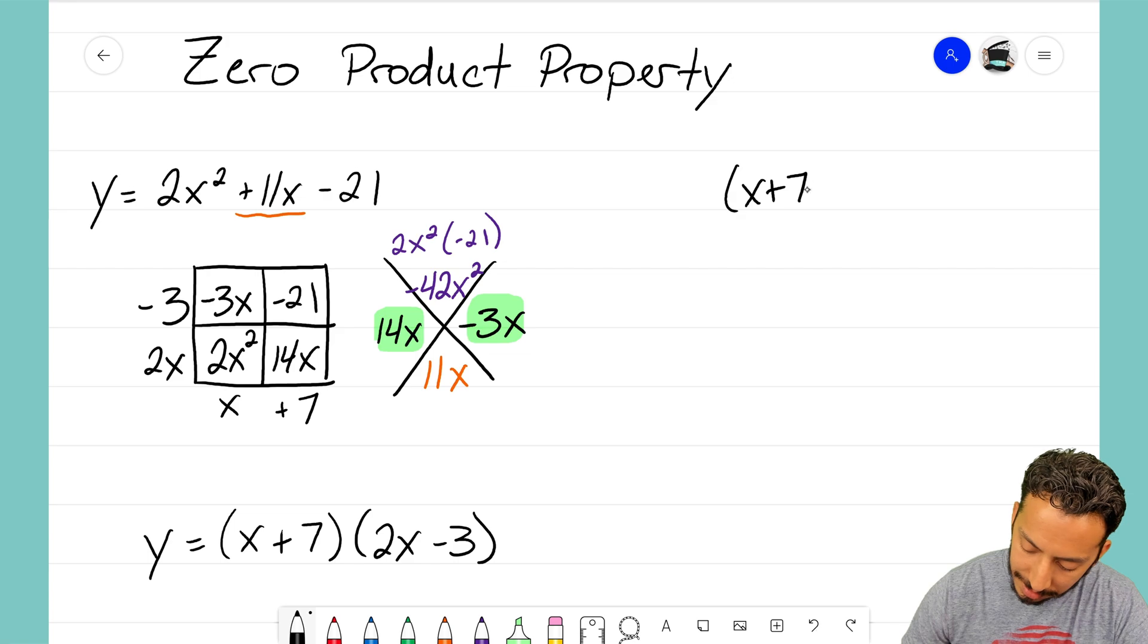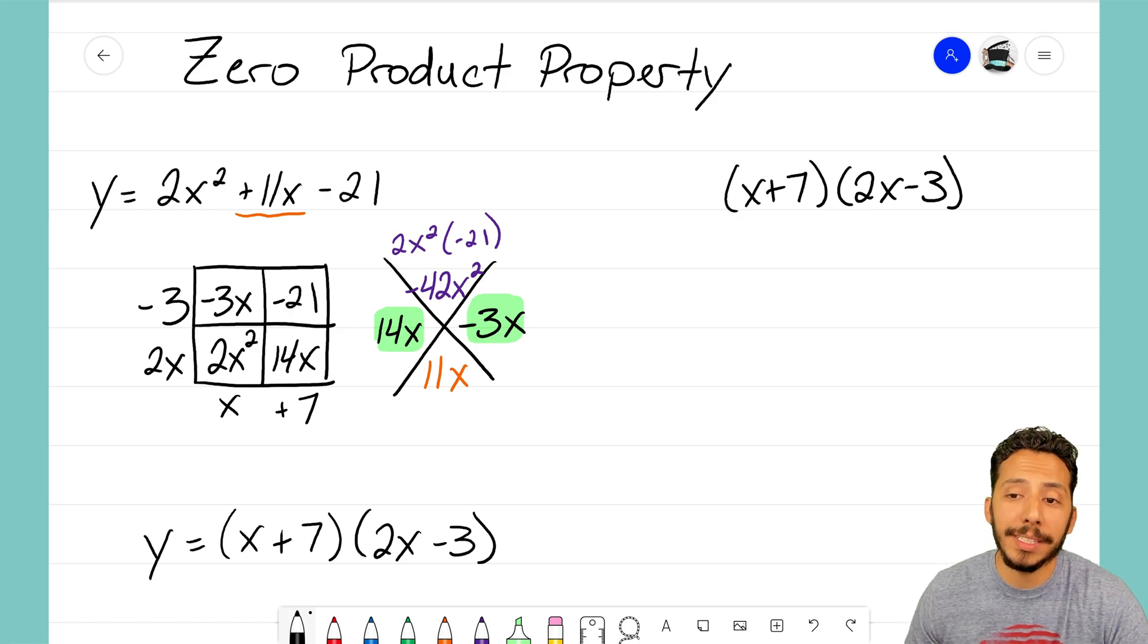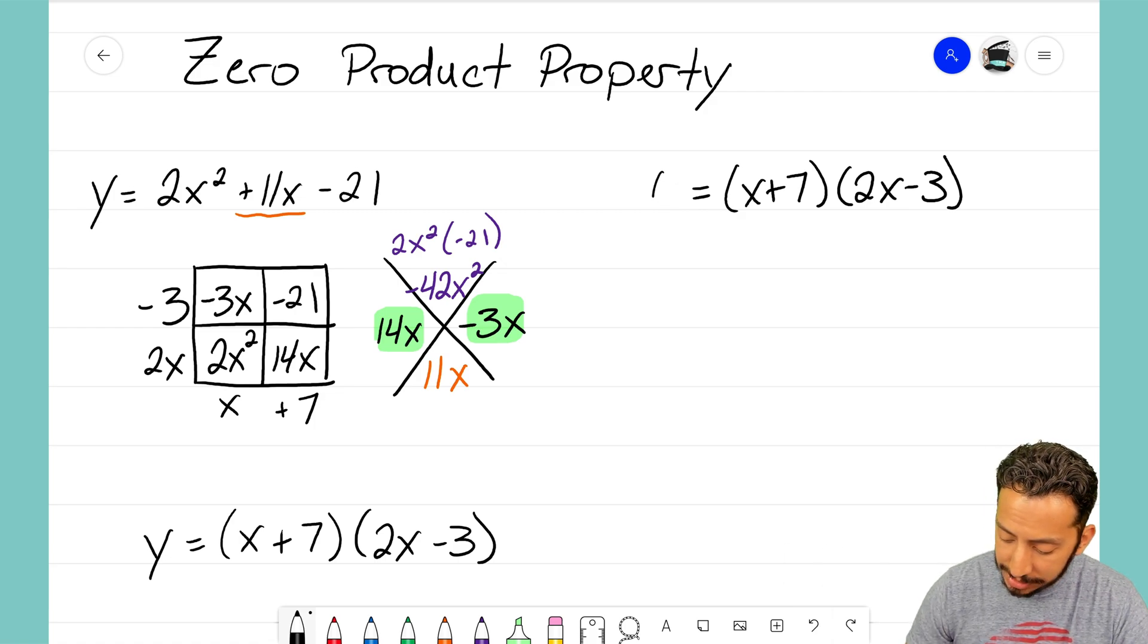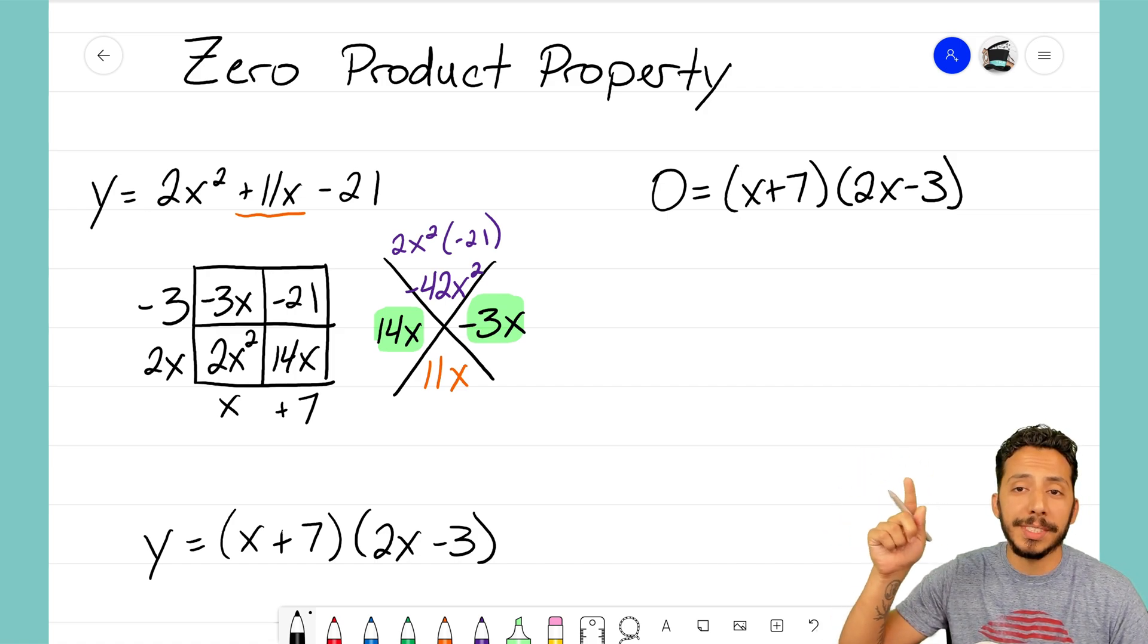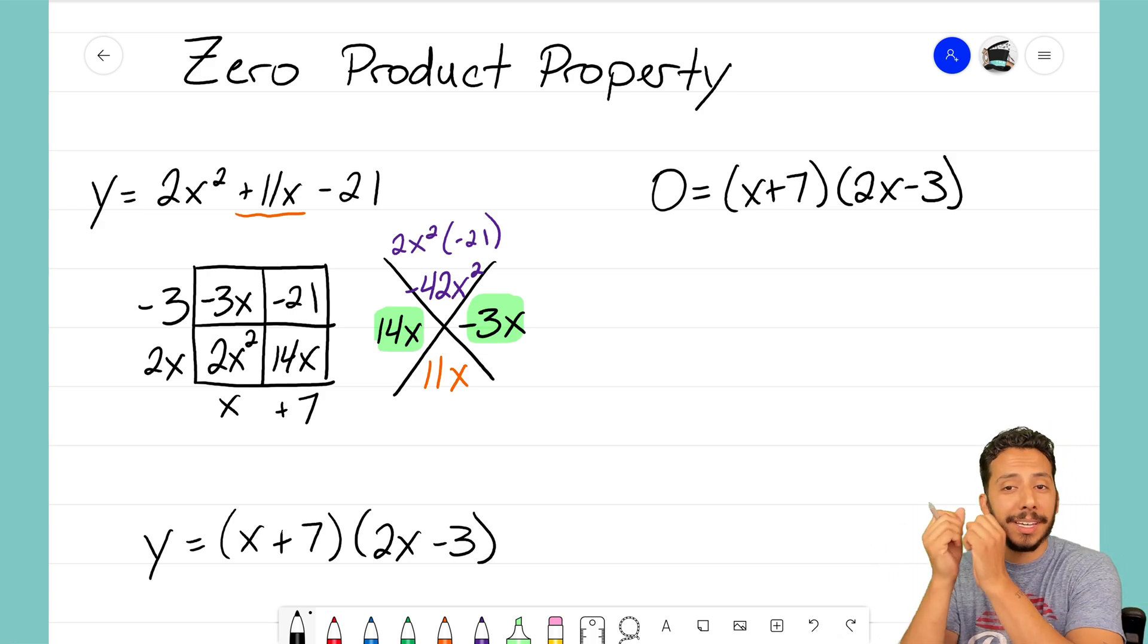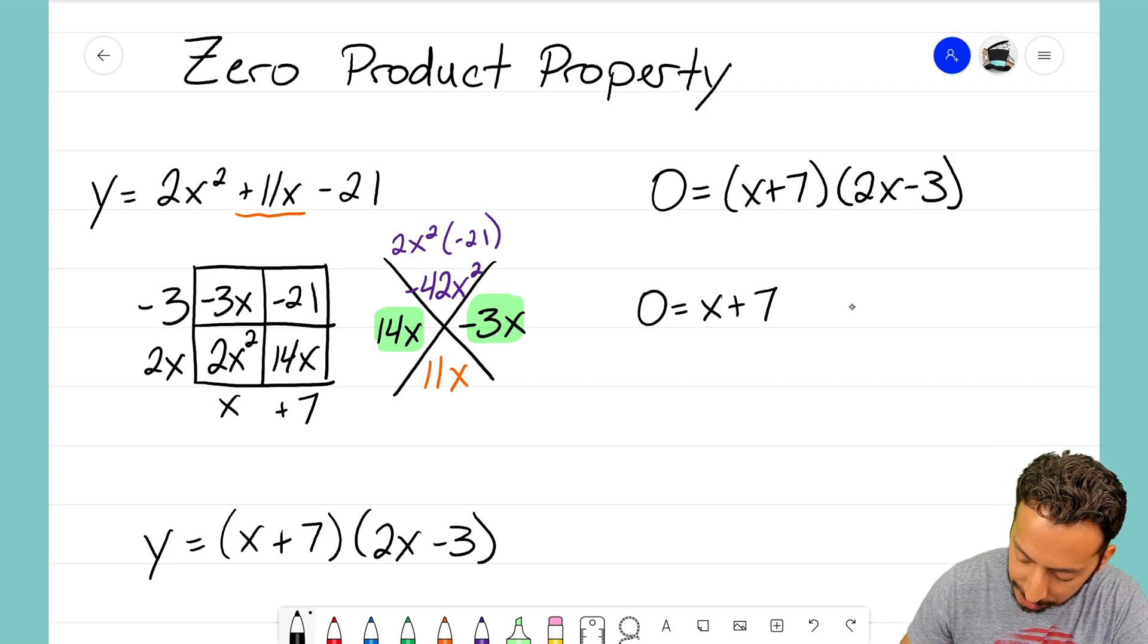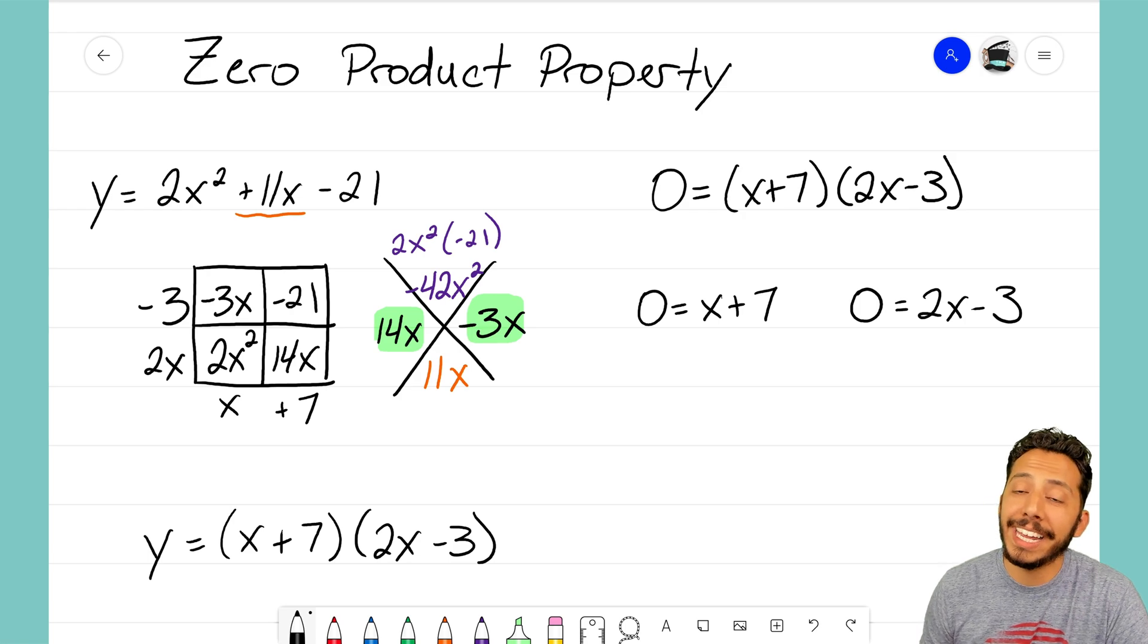Now remember, I'm not going to make this equal to y anymore because the zero product property says that if I can put this equal to zero to find out where my x-intercepts are, I then know that one of those two terms is going to equal zero. They're going to equal zero because if those two terms are multiplying and equaling zero, then one of those two numbers has to be zero. So you know what I can do now is I can separate, using the zero product property, those two factors into two different equations where they're both equal to zero, and I can solve to find out where my x-intercepts are.